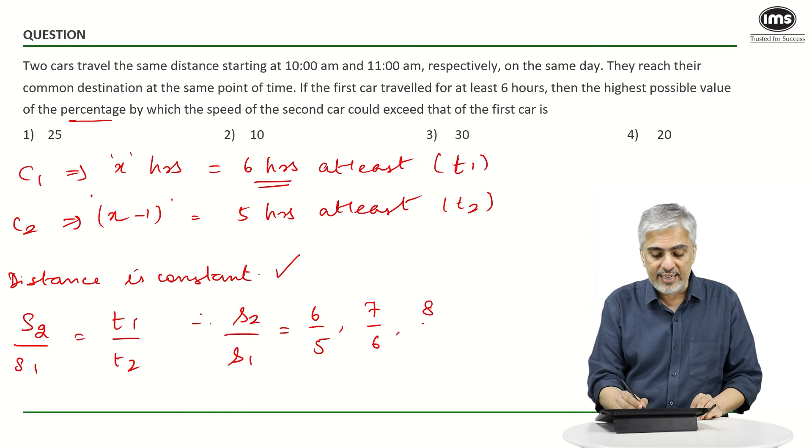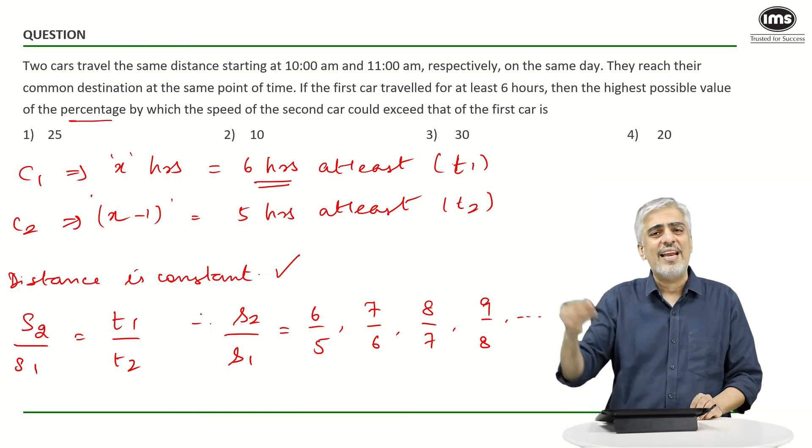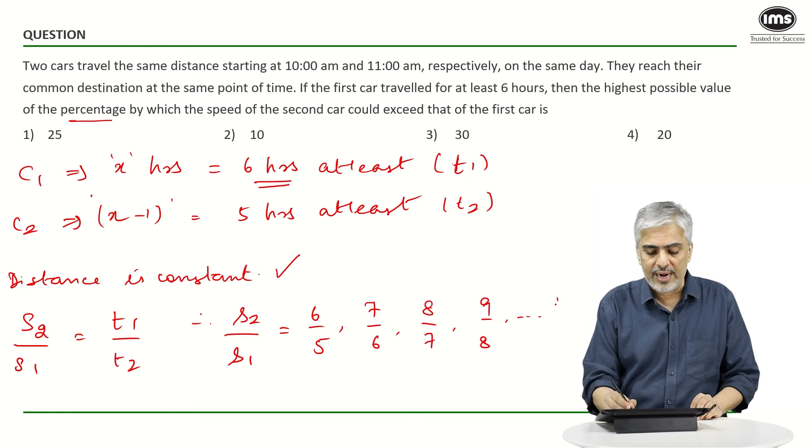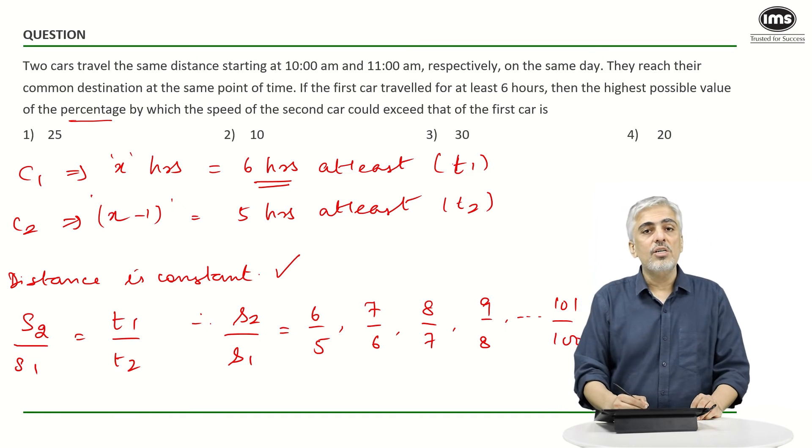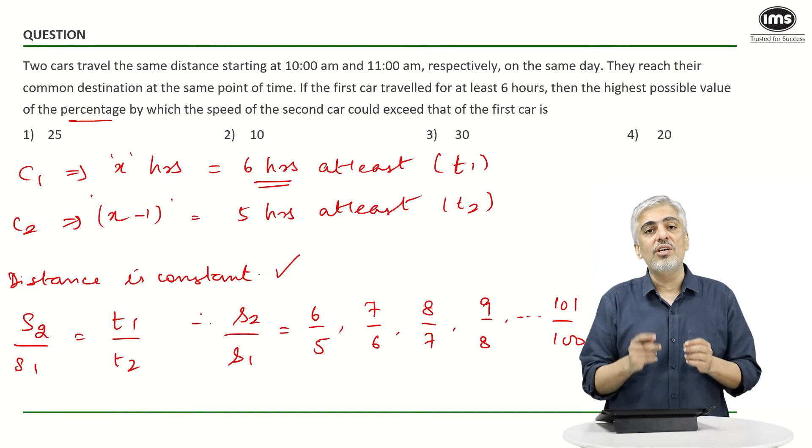Vice versa, it could be eight and seven, nine and eight, and so on till any value. Let's say one more value randomly - 101 upon 100, right? So which of this is largest?